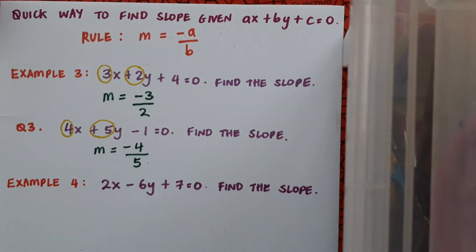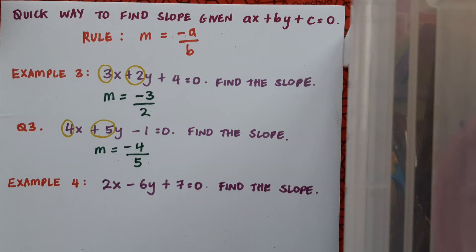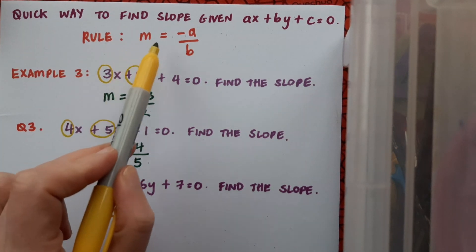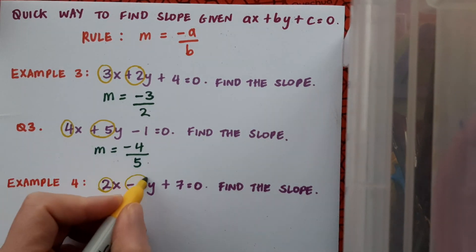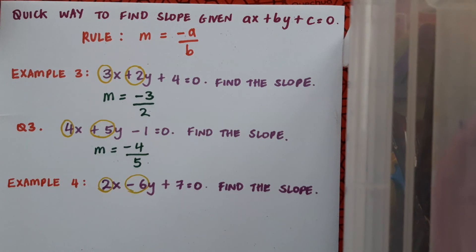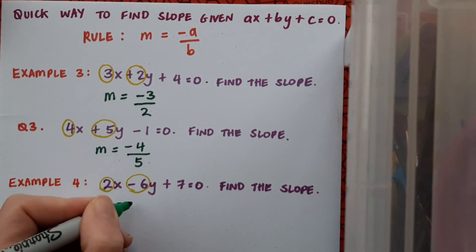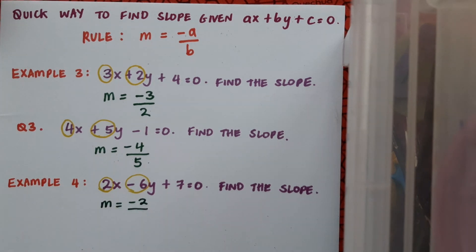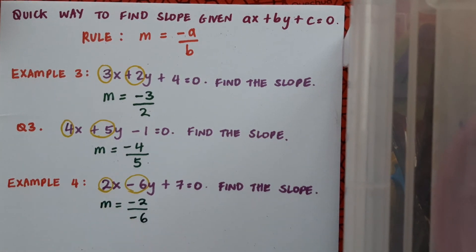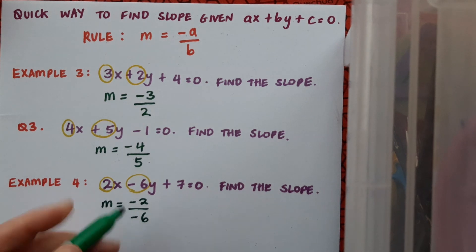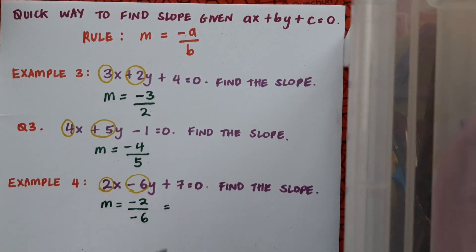Here's a further example: 2x minus 6y plus 7 equals 0. We want to find the slope — and don't forget to simplify your answer. Following the rule m equals minus a over b: the coefficient of x is 2, that's my a; the coefficient of y is minus 6, that's my b. I change the sign of x, so that becomes minus 2, over the y coefficient exactly as it is: minus 6. The minus divided by minus gives a plus, and 2 over 6 cancels down to 1 over 3. So the slope is 1 over 3.